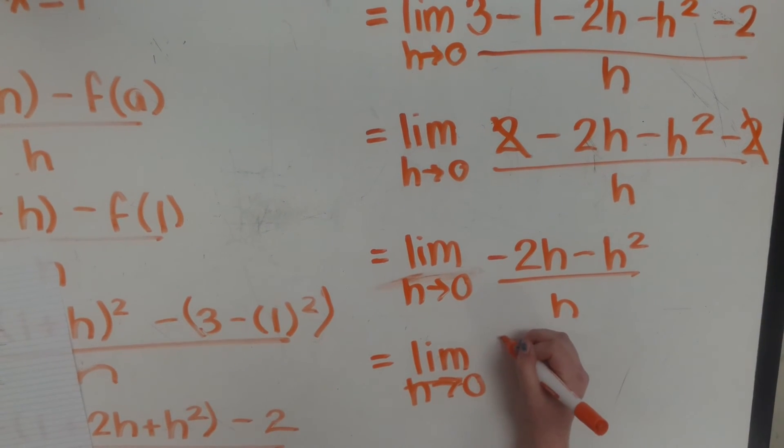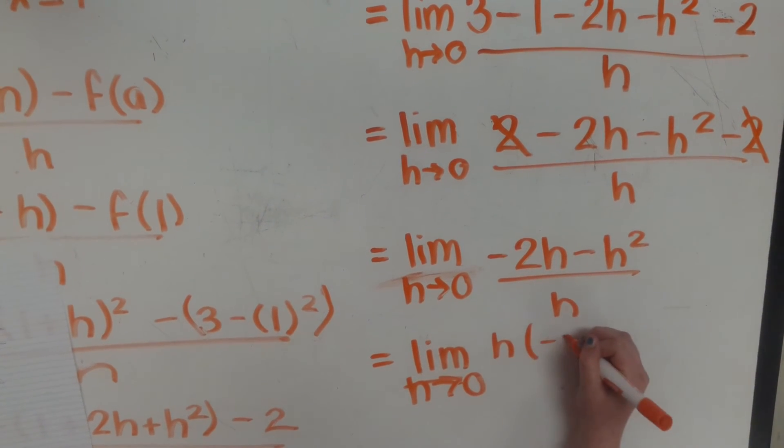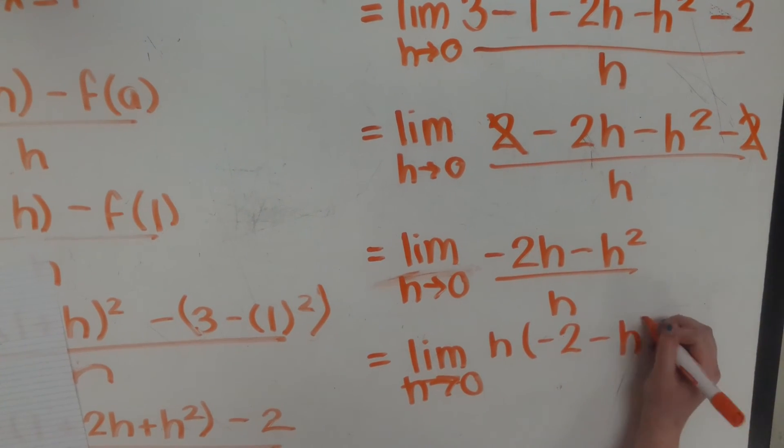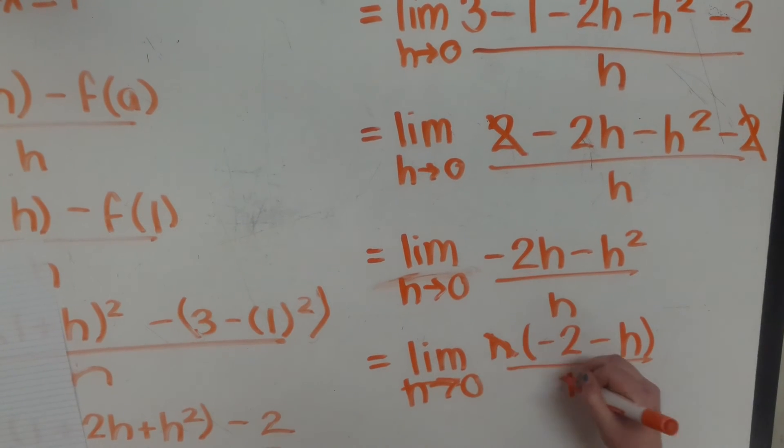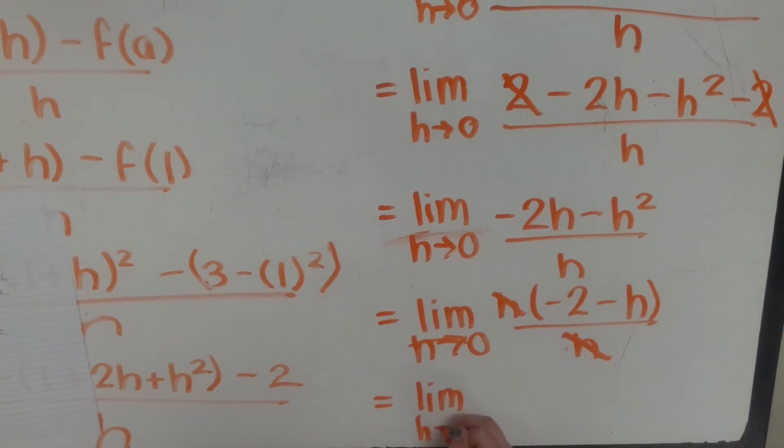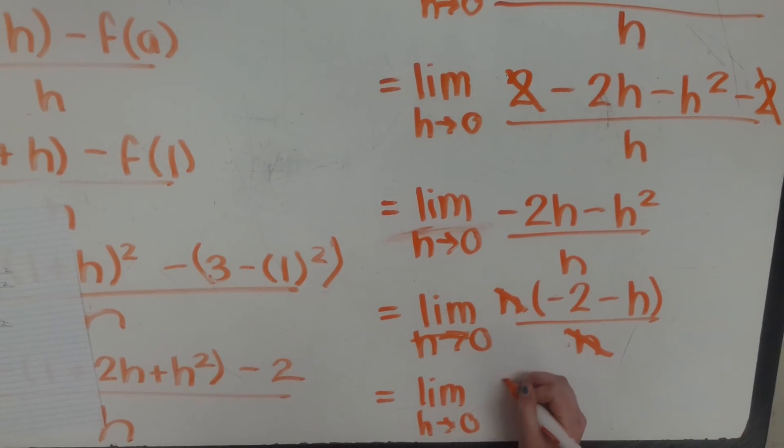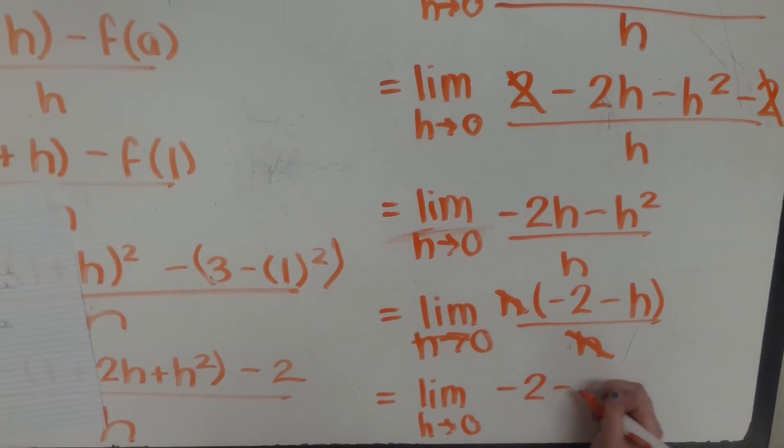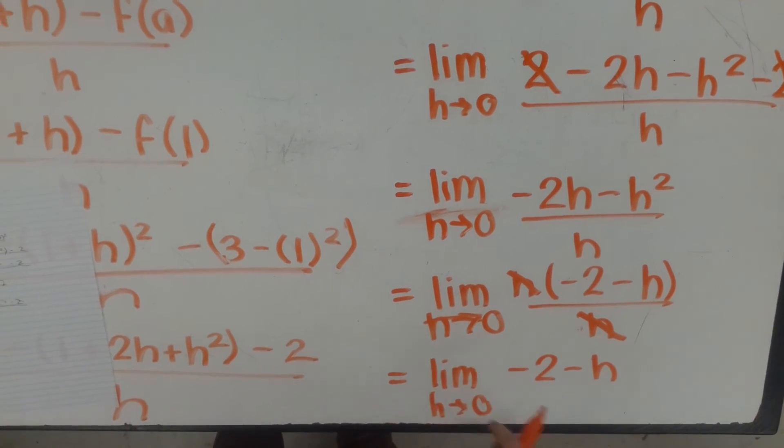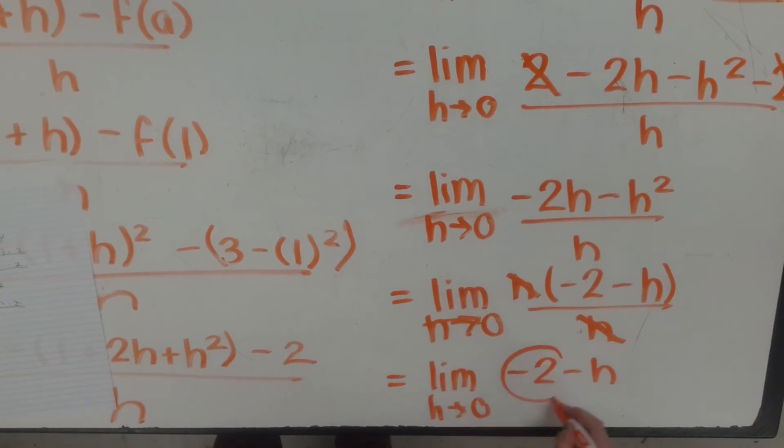So we have h times negative 2 minus h divided by h. These cancel. So we are left with negative 2 minus h. And so this is the number that would be approaching the limit. So this is our answer.